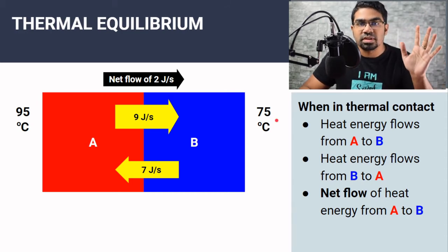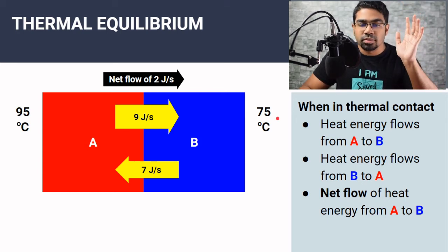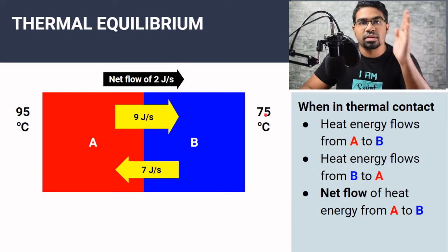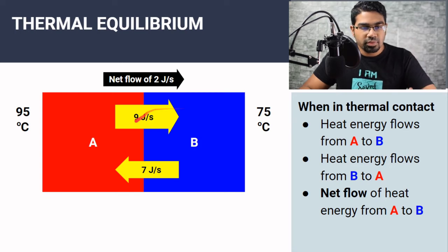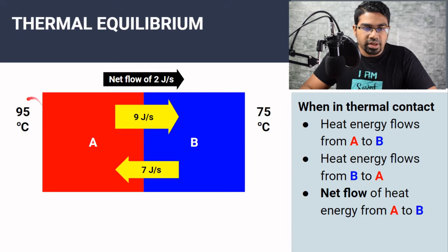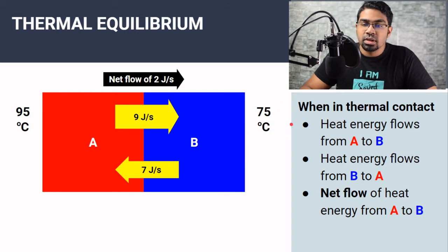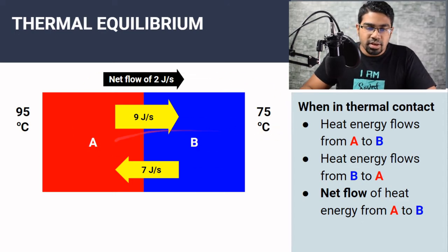The rate of temperature change is dependent on the specific heat capacity of the object. The drop and increase in temperature do not happen at the same rate, and so the final temperature of the two objects will not be the midpoint of the two initial temperatures — this is a common misconception. In this example, from 100 it dropped to 95 — a drop of 5 degrees Celsius — while from 60 it went up to 75, an increase of 15 degrees Celsius.